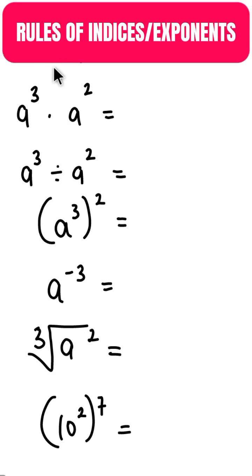Here I will be explaining the rules of indices or exponents as you may call it. So in indices, when you have multiplying indices, this is a multiplication sign, when you have multiplying indices with the same base a, all you have to do is to add the powers.